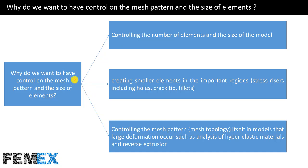Why do we want to have control on the mesh pattern and the size of elements? First, controlling the number of elements and the size of the model. Second, creating smaller elements in the important regions — for example, stress risers including holes, crack tips, and fillets. Third, controlling the mesh pattern or mesh topology itself in models where large deformation occurs, such as analysis of hyperelastic materials and reverse extrusion.